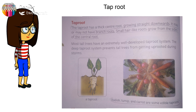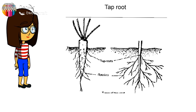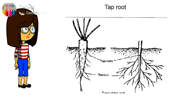The deep tap root system prevents tall trees from getting uprooted during a storm. As you can see in the picture, the tap root has a main central root that goes deep into the soil, with small hair-like roots coming out from the central root. Because of this central root, tall trees do not fall down easily or get uprooted even when high-speed wind is blowing.